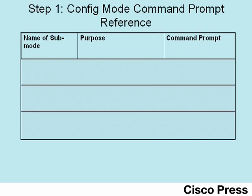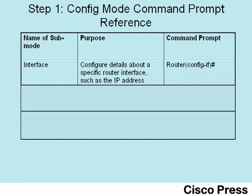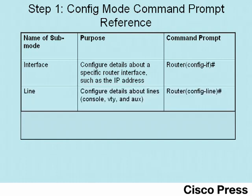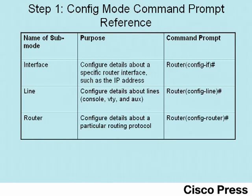Configuration mode is separated into several different sub-modes. For instance, the sub-mode called interface mode is used to configure details about a particular interface, such as that interface's IP address. The best way to understand configuration sub-modes is to see it from the command line interface. For reference, note also the line and router sub-modes that you may see in some of the other labs.